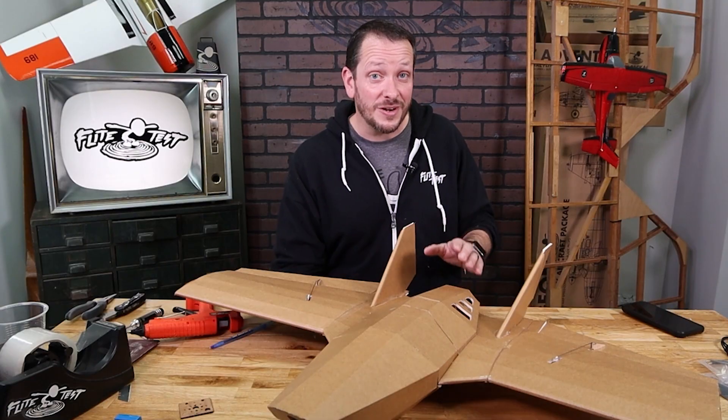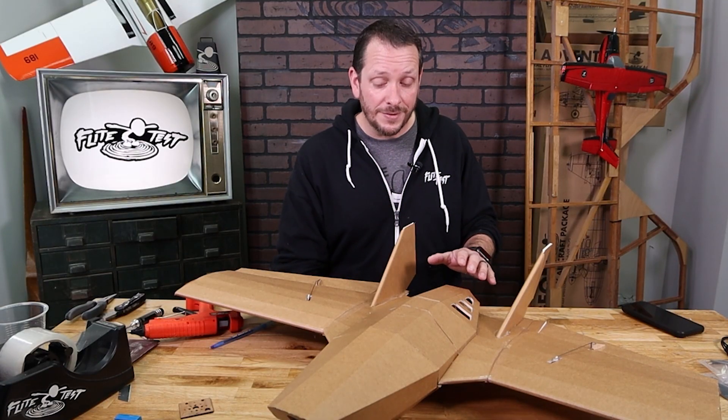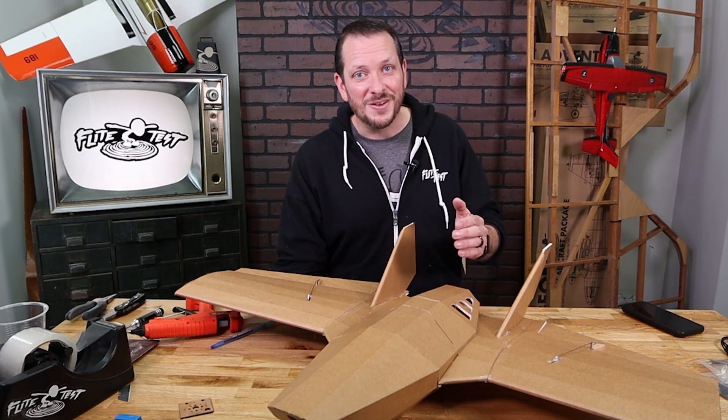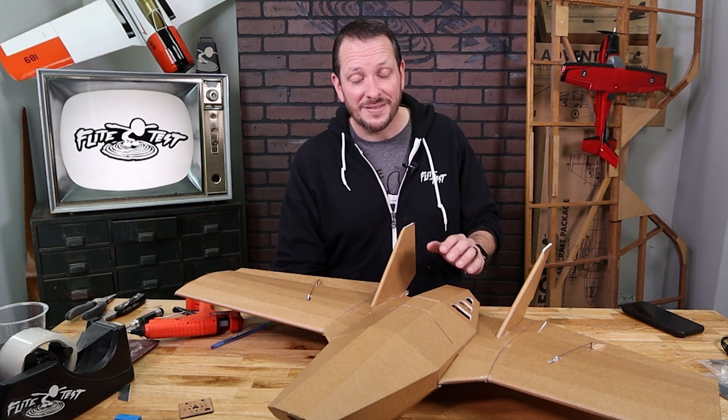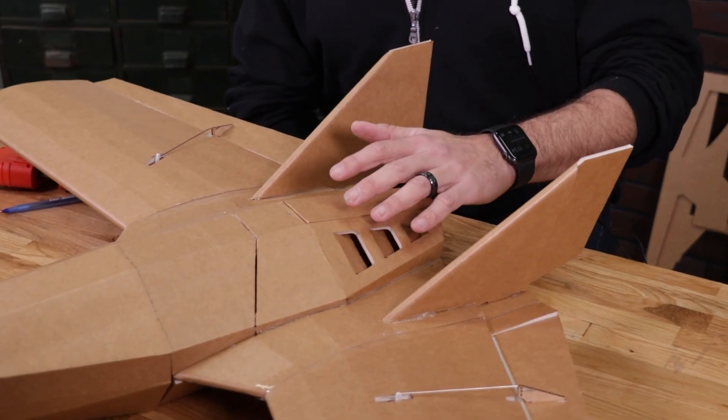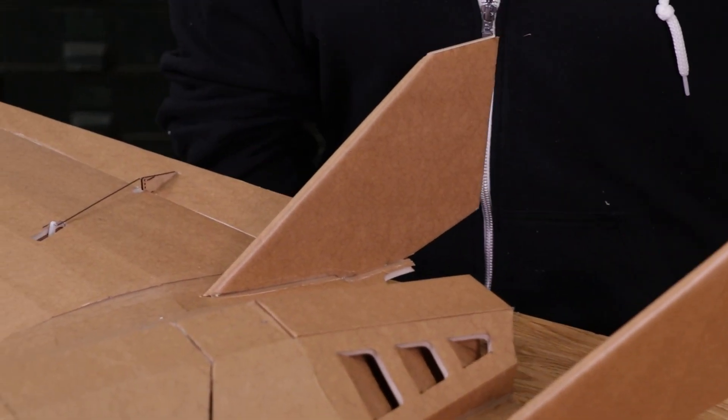Now the cool thing about the FT Flurkin is it's incredibly versatile and we're going to have different configurations of tails in the future that you can choose to put on and also different kit versions. This here is the stock Flurkin. What we want to do is gather our parts and we'll start building together.